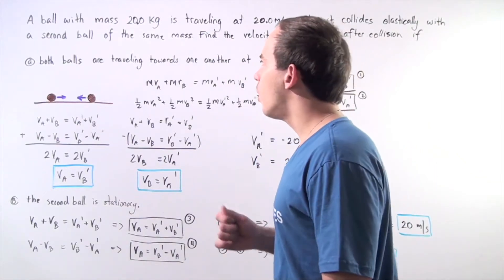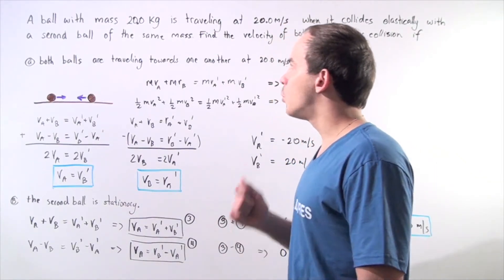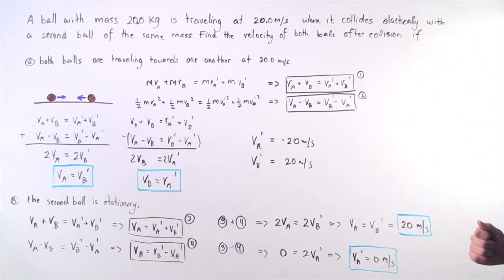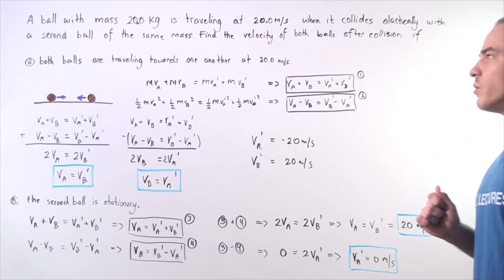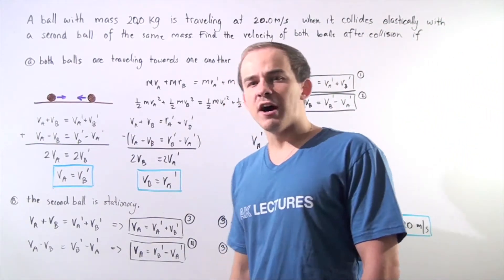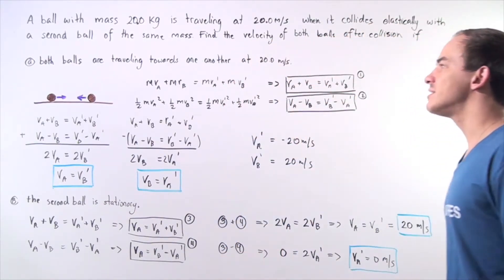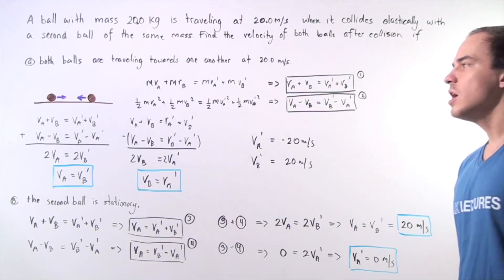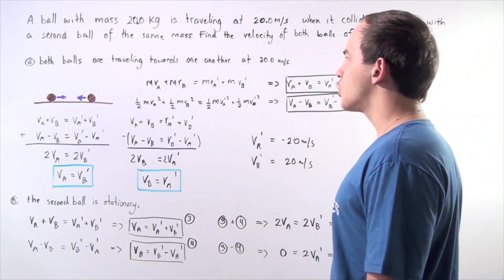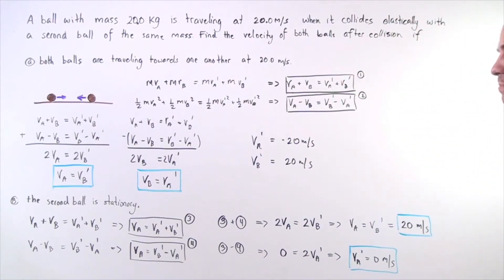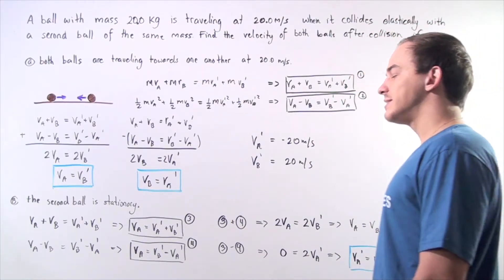Suppose a ball with mass 20 kilograms is traveling with a velocity of 20 meters per second when it collides elastically with a second ball of the same mass. We want to find the velocity of the two balls after the collision if A, both balls are traveling towards one another at 20 meters per second, and B, the second ball is stationary.